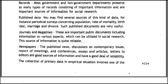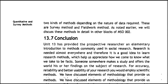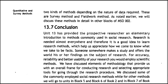Journals and magazines are important public documents including information on various aspects which can be utilized in social research; this source of information is quite reliable. Newspapers — published news, discussions on contemporary issues, reports of meetings and conferences, essays and articles, and letters to editors are good sources of information with a good deal of reliability. The collection of primary data in empirical situations involves one of two kinds of methods depending on the nature of data required: the survey method and the field work method. These methods will be discussed in detail in other blocks of MSO 2.